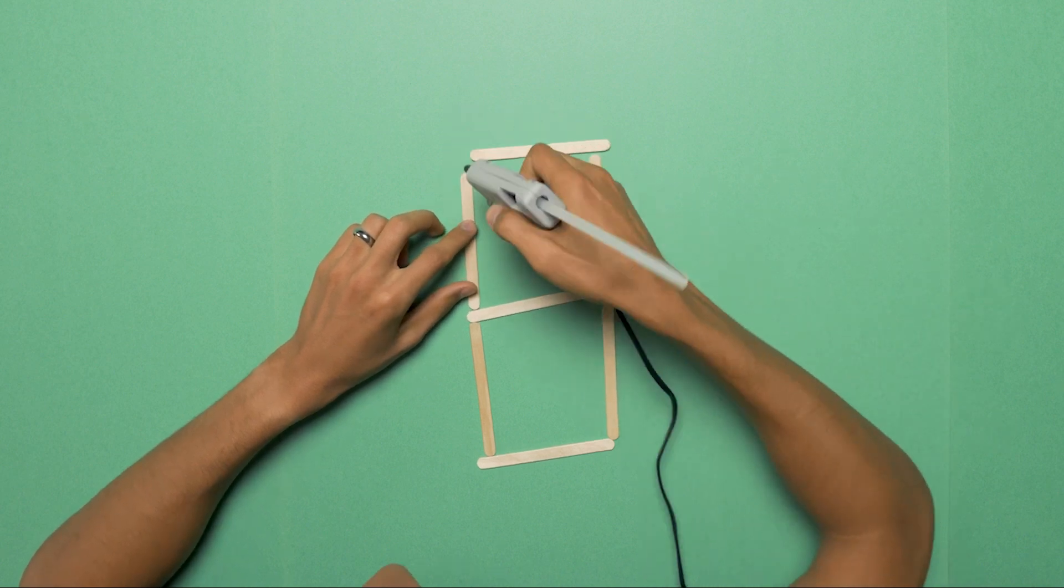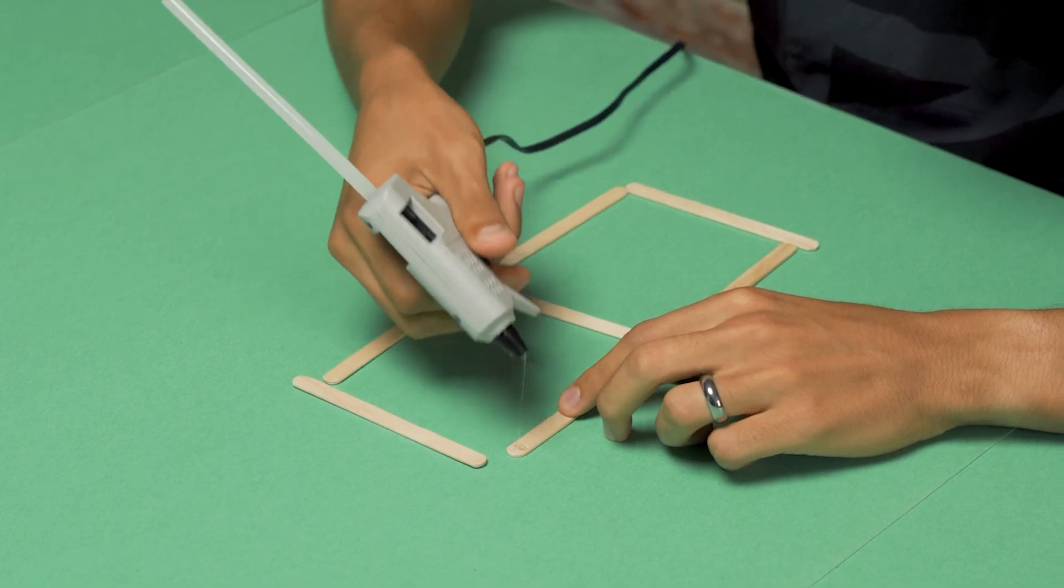First, we're going to grab seven of our popsicle sticks and our glue gun to make a rectangular frame.